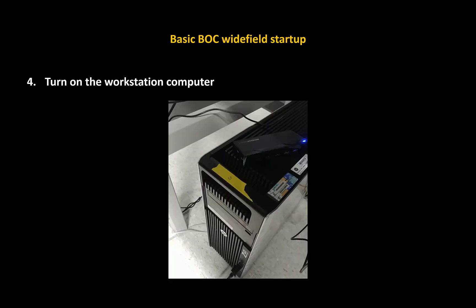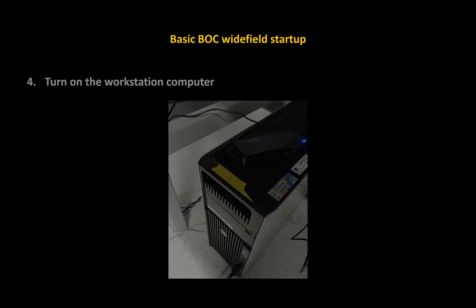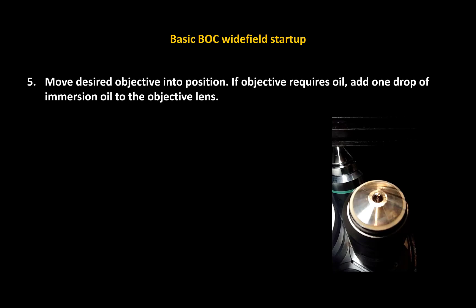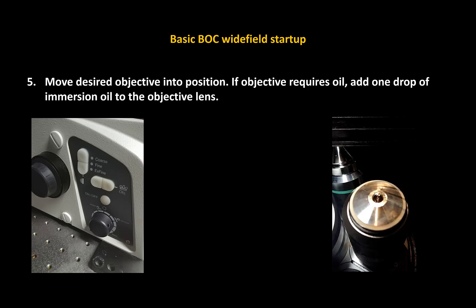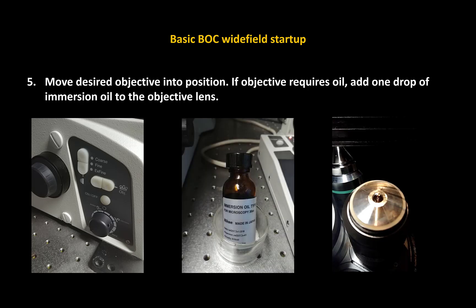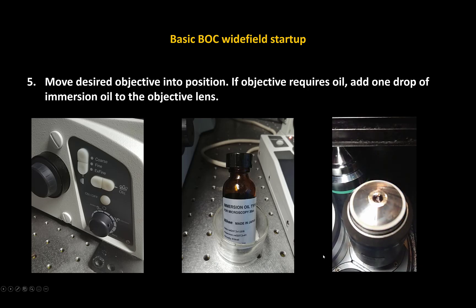At this point, you can turn on the workstation computer and log into your WISC account. After turning on the workstation computer, you're going to want to put your sample on the stage. You're going to want to move the desired objective into position — you can do it either on the microscope itself or through Elements if you've already signed in. You can press the button to move the objective left or right until you get the one you want. If it's an oil-based objective, you're going to want to add just a single drop of oil to that objective. The oil will likely be on the left or right side of the microscope system. Here I'm showing just one drop of oil, which is an ideal amount.